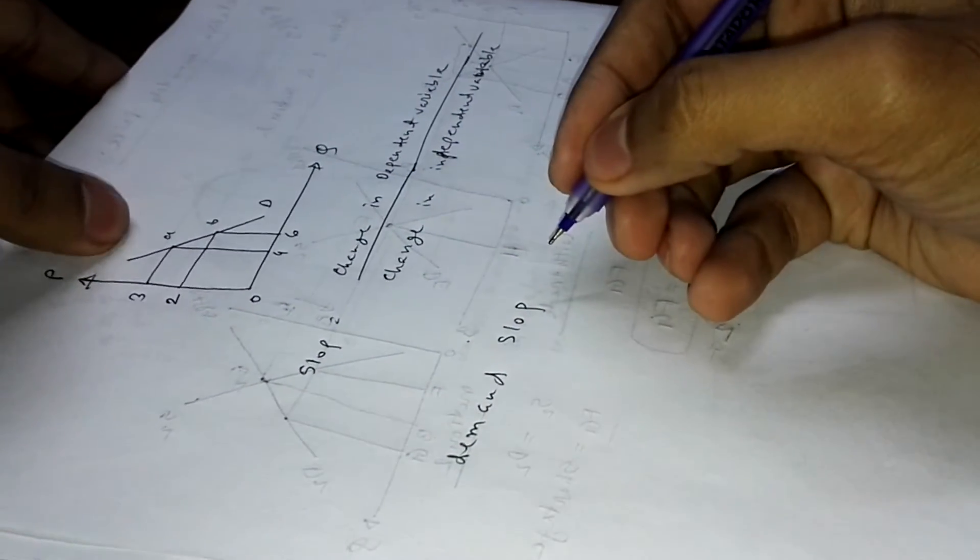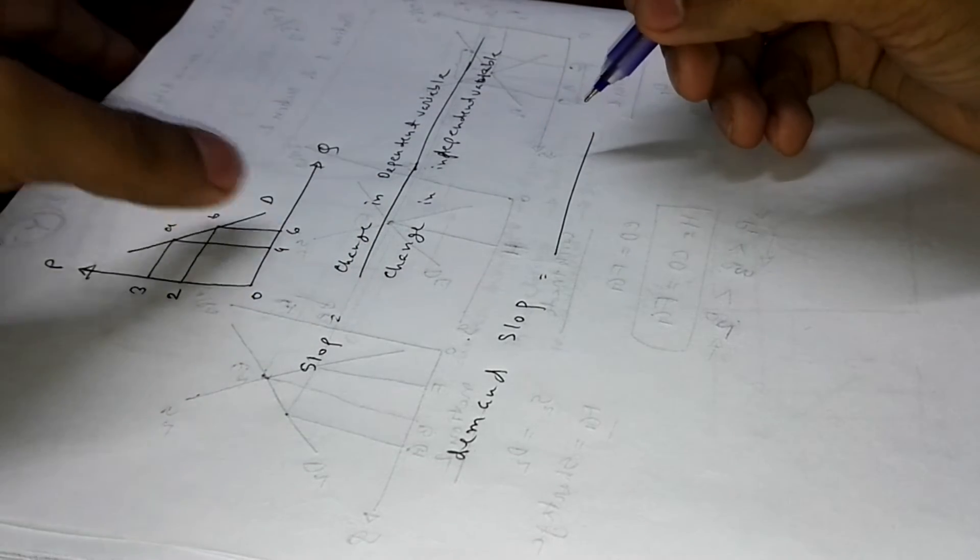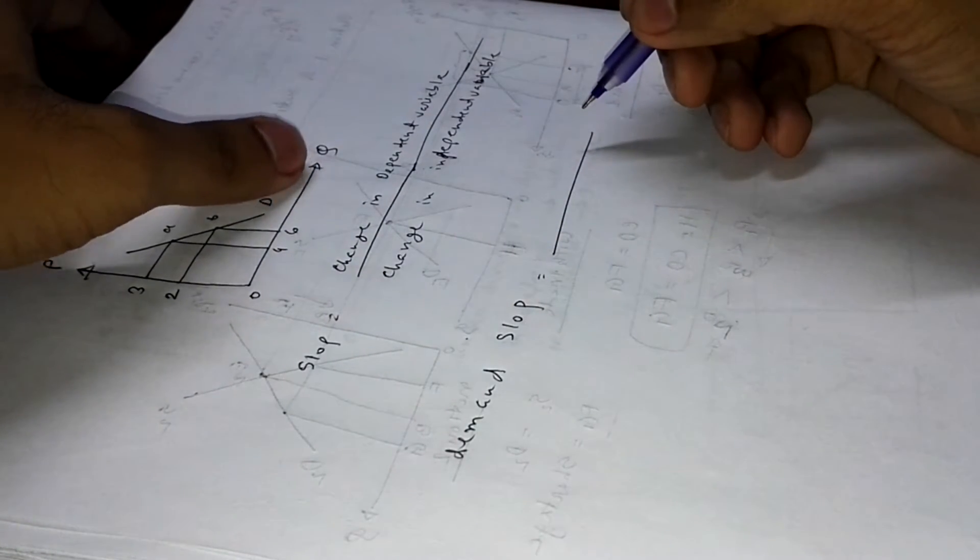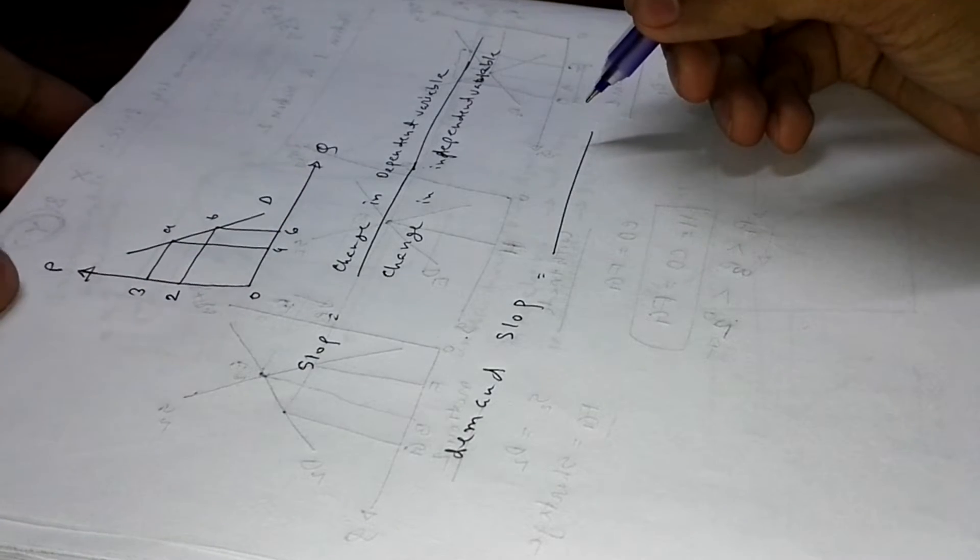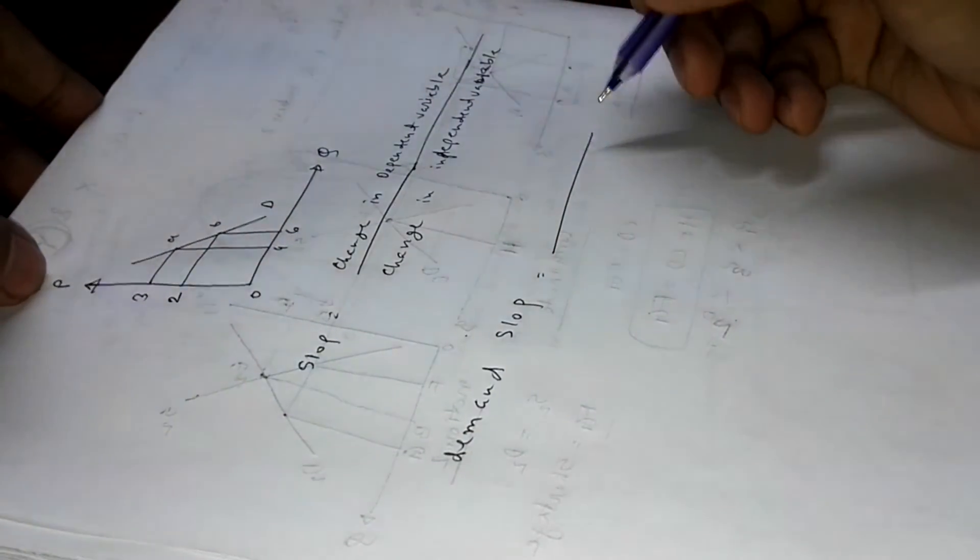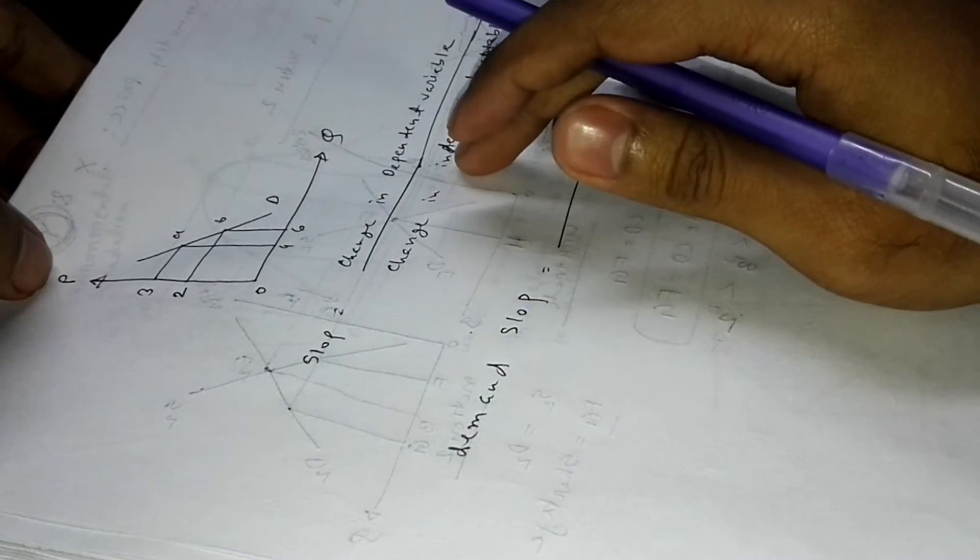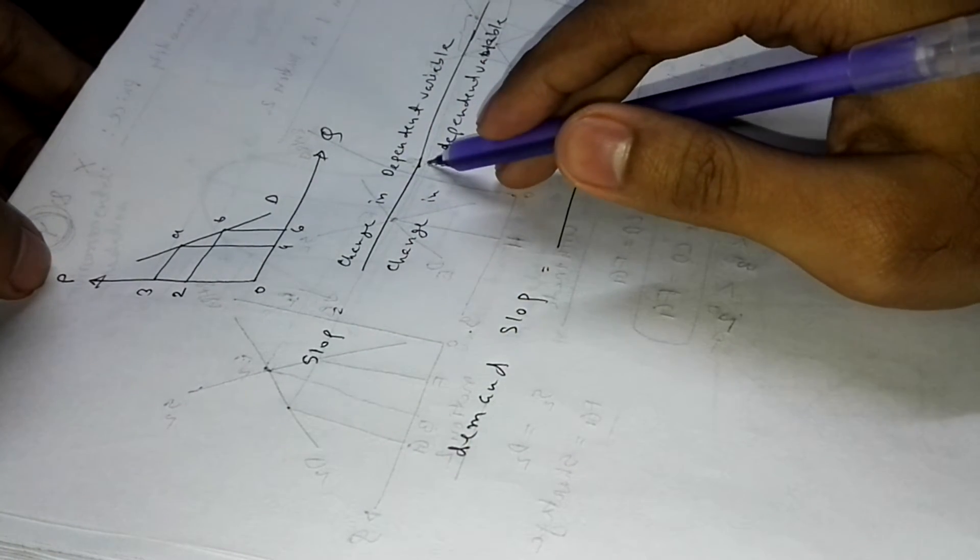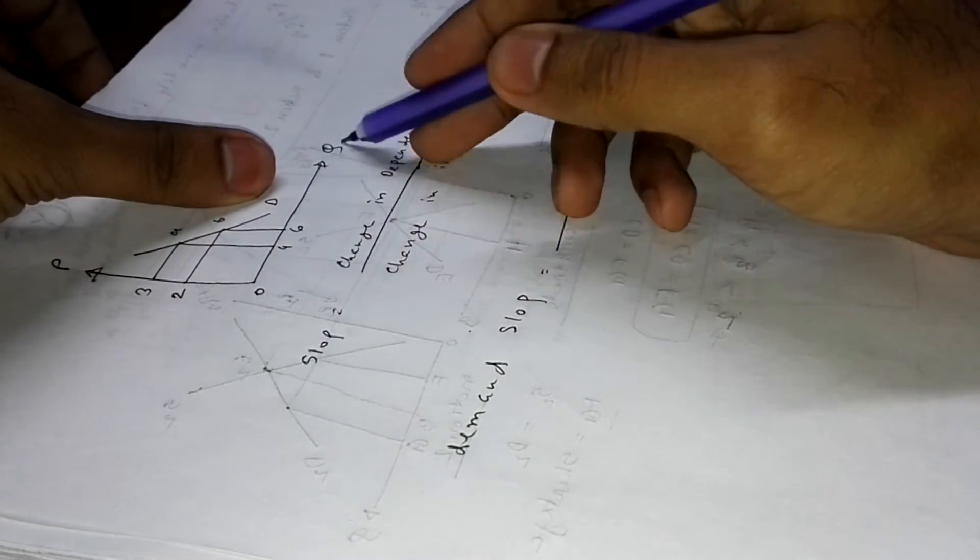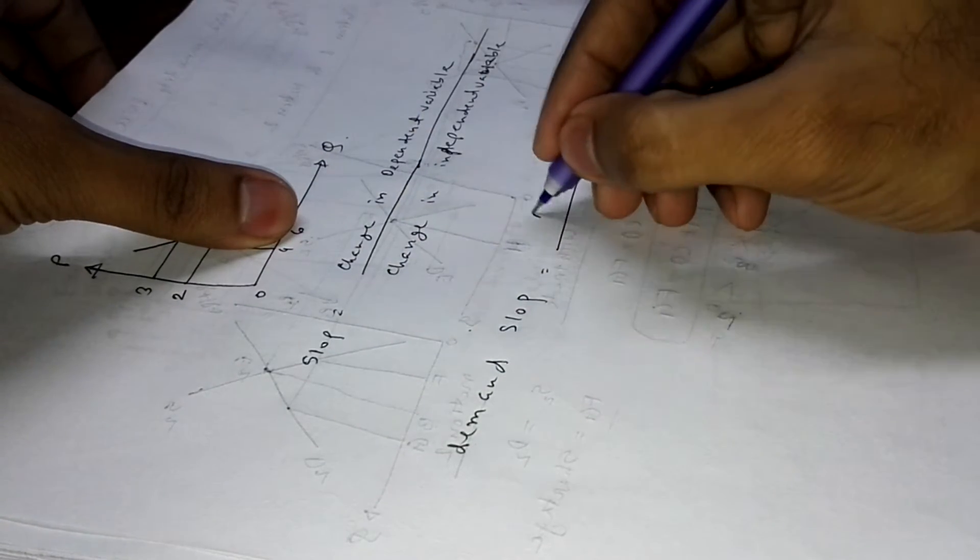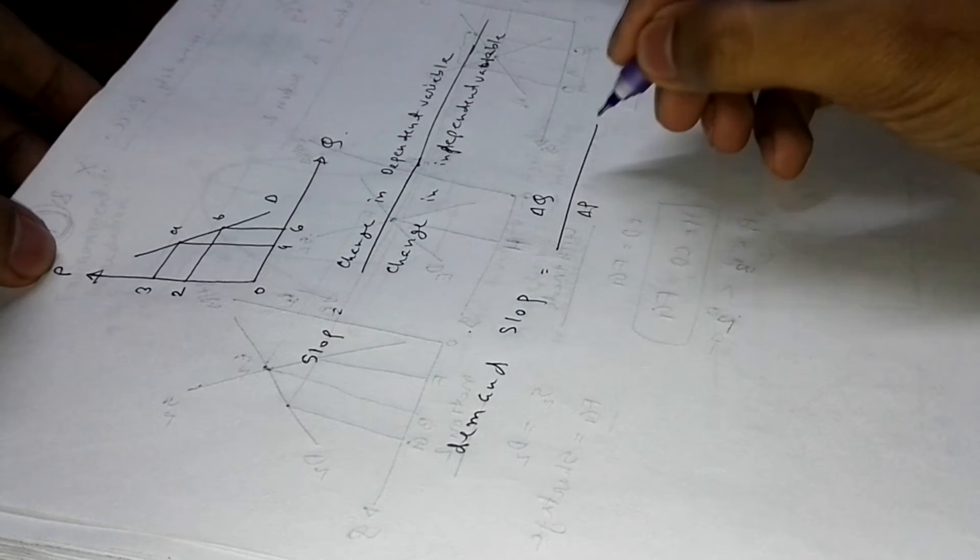So for demand slope, or slope of this curve, we know in economics quantity demand is a dependent variable and price is independent variable. So for this case, what you have to do is this: del Q divided by del P, that means change in quantity demanded by change in price.